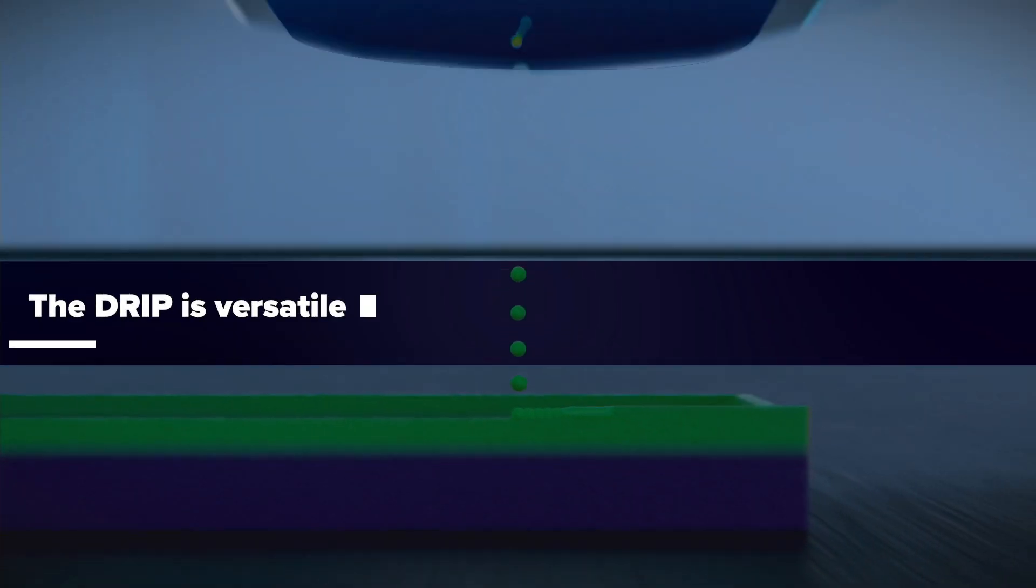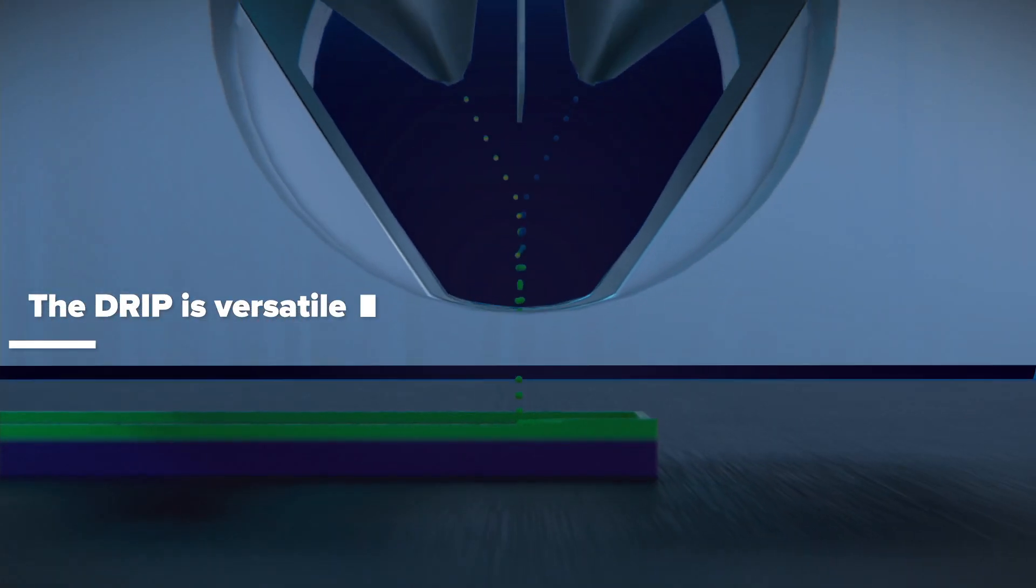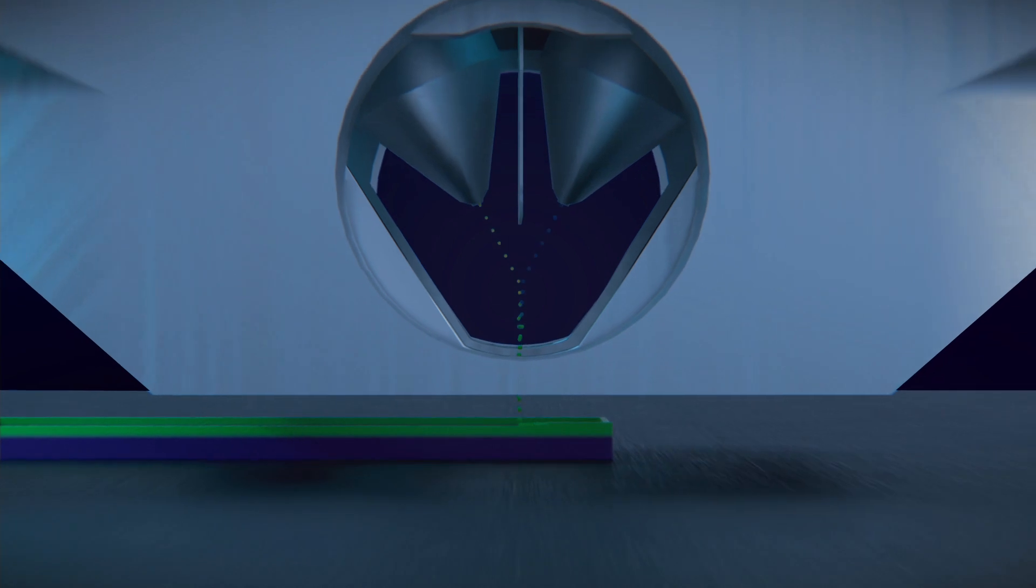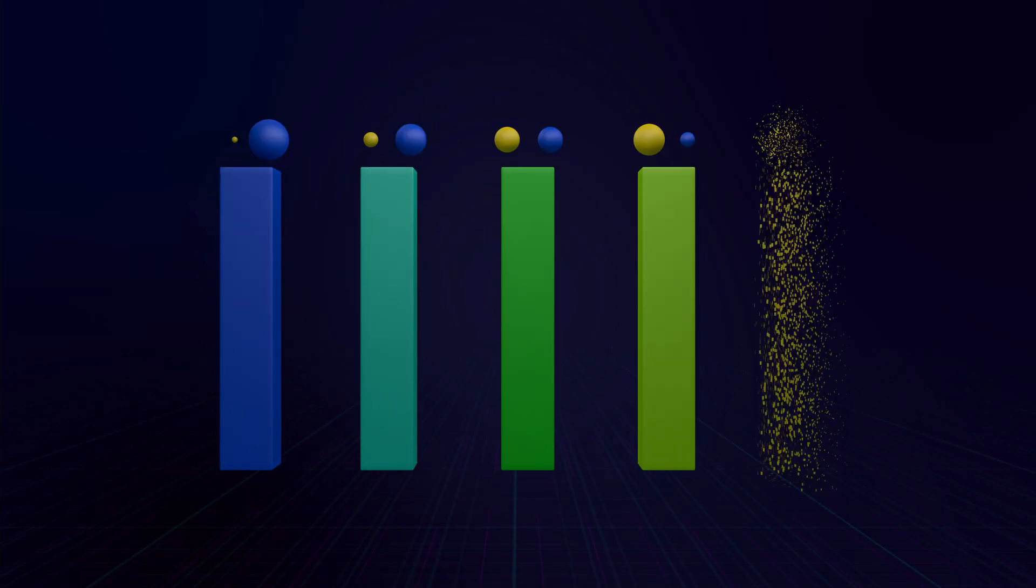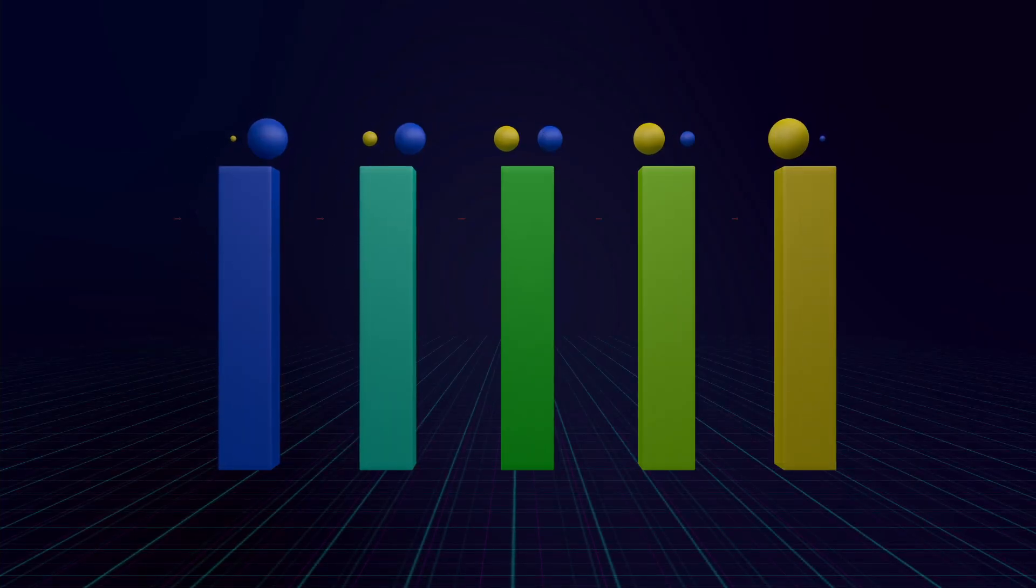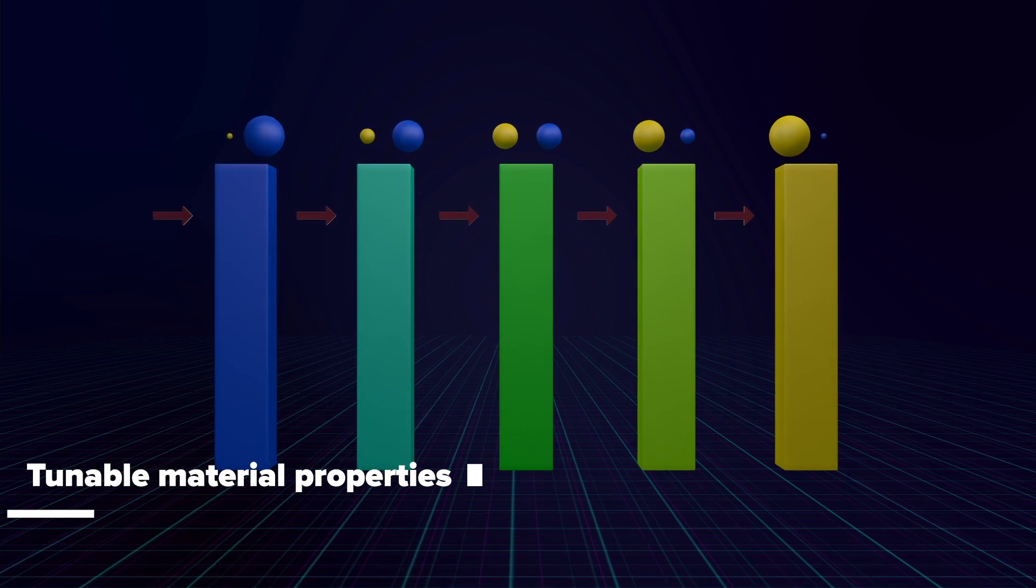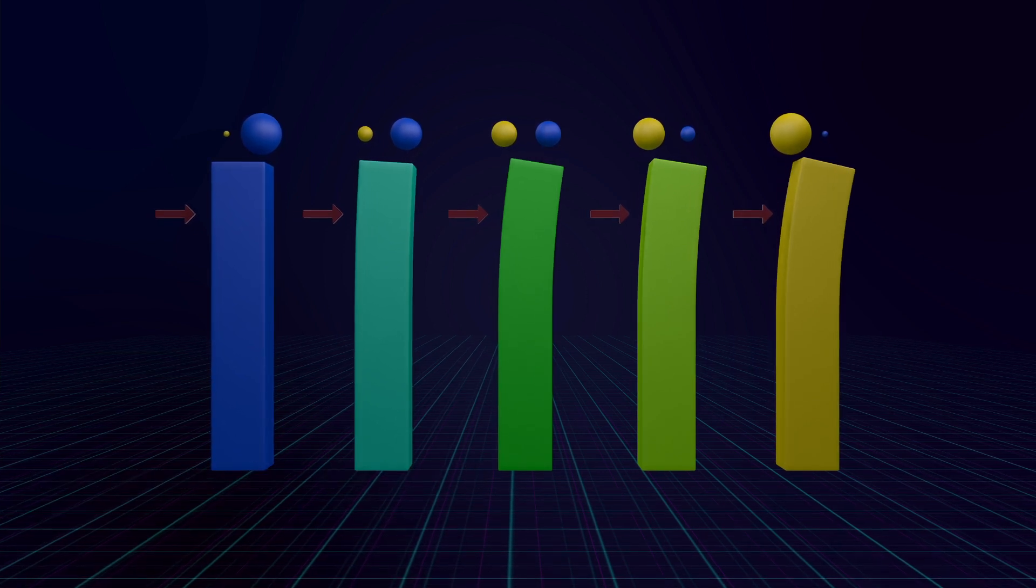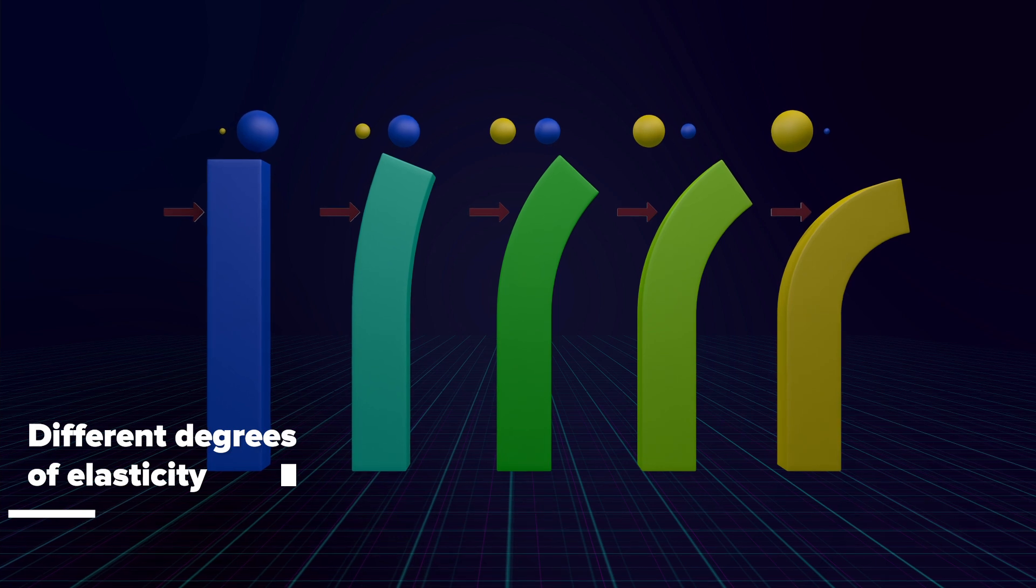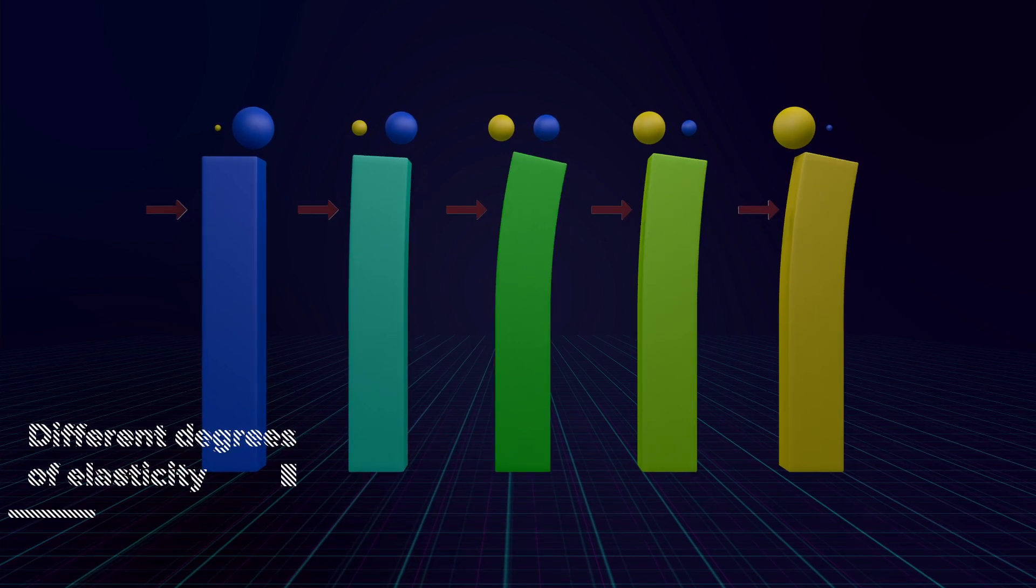The DRIP is versatile, allowing for printing of materials with a variety of different chemical and mechanical properties. The DRIP allows for online control of the reactive ink ratio, allowing for even finer tuning of the material properties. This way, it is possible to obtain materials with different degrees of elasticity with one set of inks.